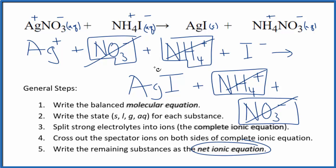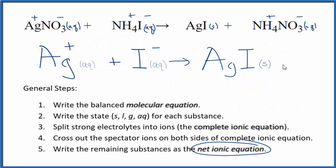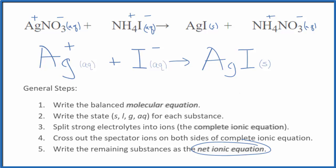I'll clean this up, write the states, and we'll have our net ionic equation. This is the balanced net ionic equation for AgNO3 plus NH4I. You can see that charge is balanced — we have a plus and a minus, giving a net charge of zero. This is a neutral compound on the products side, also net charge of zero. Charge is the same on both sides, and if you count the atoms, they're the same too. This is Dr. B with the balanced net ionic equation for AgNO3 plus NH4I. Thanks for watching.